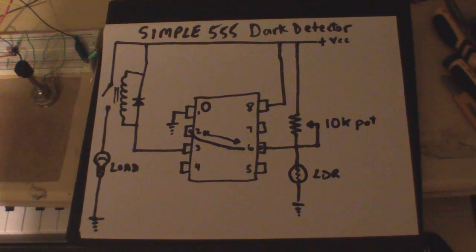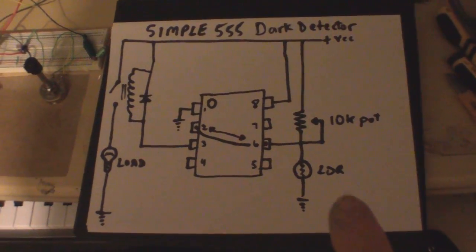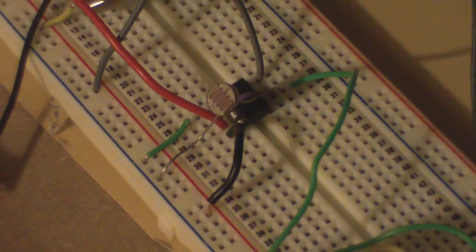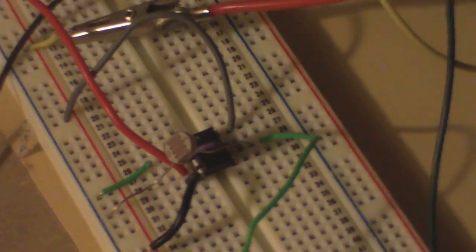So basically what happens is the light dependent resistor, which is right there, it detects the light and makes all the difference. That's the light dependent resistor right there.